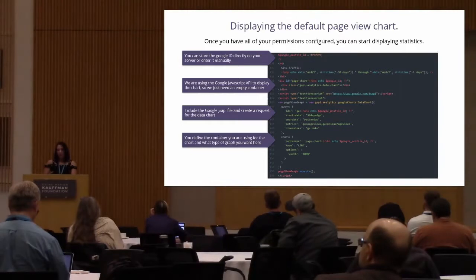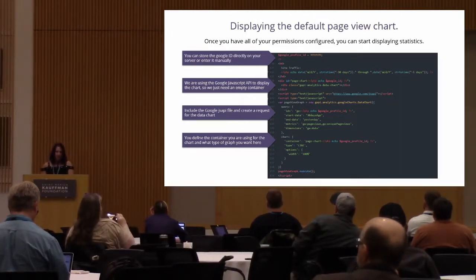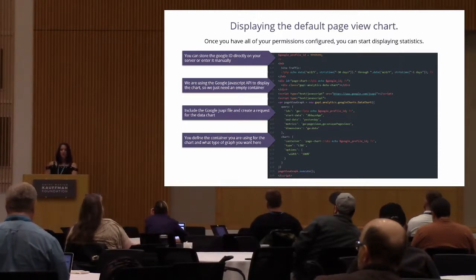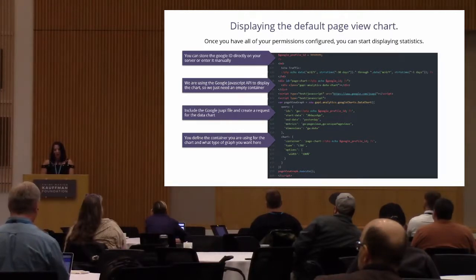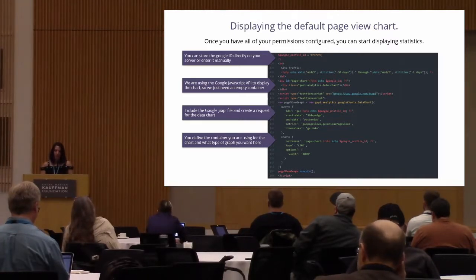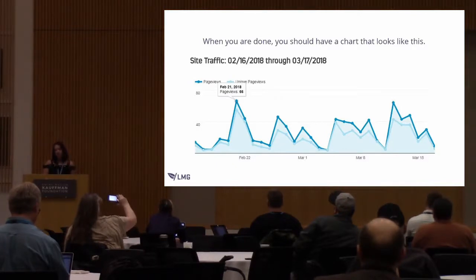To display the default page view chart showing all page views over time, you put your profile ID at the top of the code. In this example I'm using the Google JavaScript API because it creates the charts for you and they look cool. Once you have that attached, you create a request for the data chart, specifying your profile ID, the metrics — page views and unique page views — organized by date, and set it as a line chart. When done, it's interactive so users can hover over the dots to see more information.